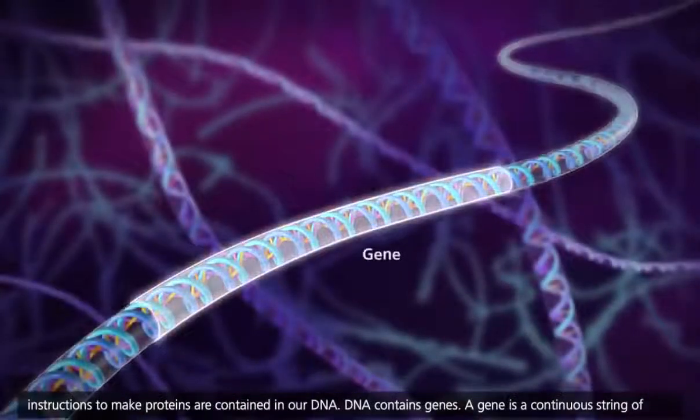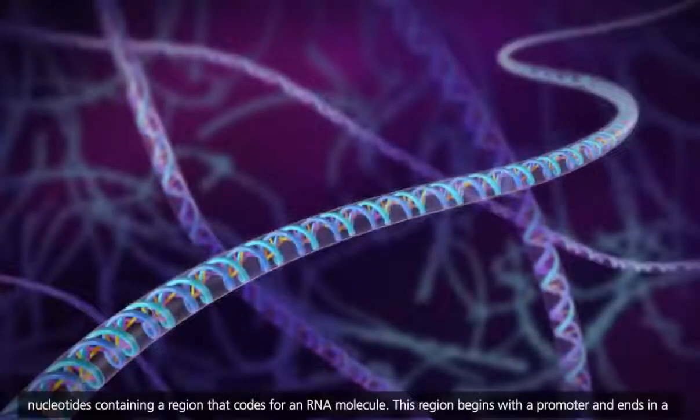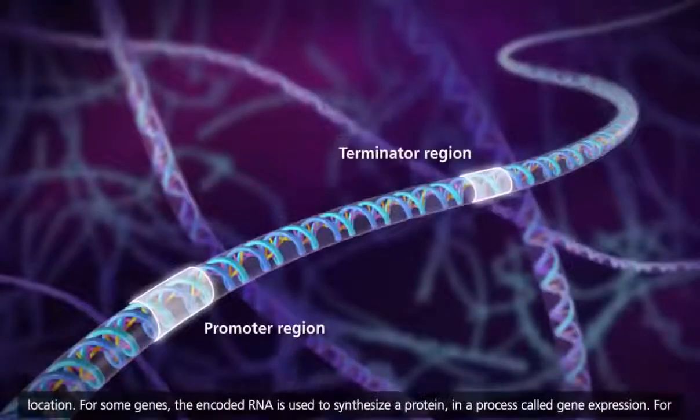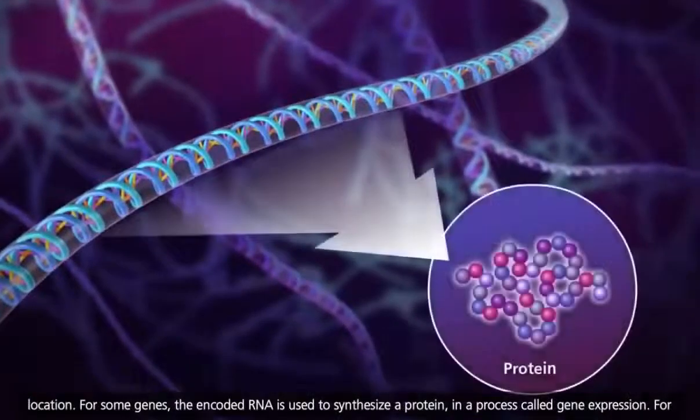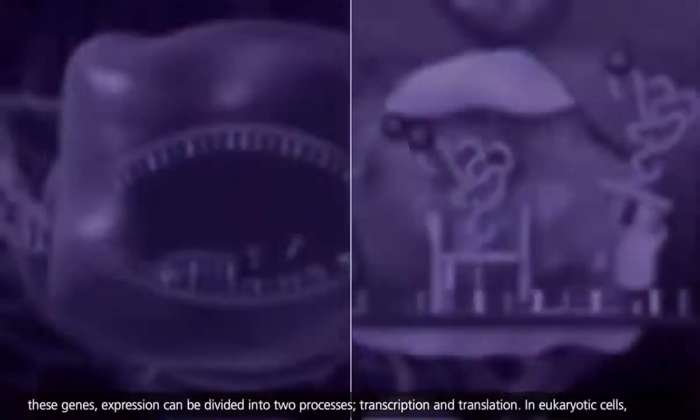DNA contains genes. A gene is a continuous string of nucleotides containing a region that codes for an RNA molecule. This region begins with a promoter and ends in a terminator. Genes also contain regulatory sequences that can be found near the promoter or at a more distant location. For some genes, the encoded RNA is used to synthesize a protein in a process called gene expression. For these genes, expression can be divided into two processes.